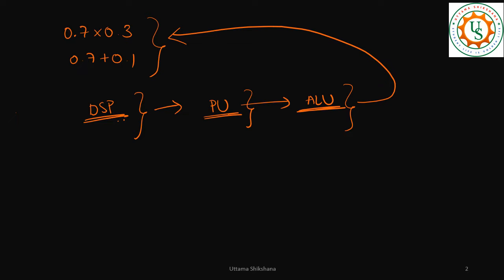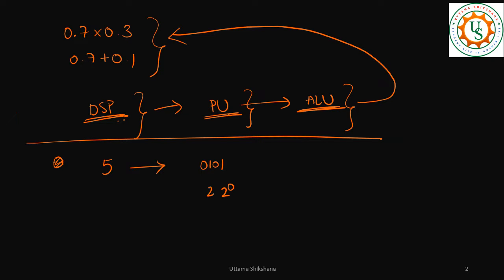According to basic mathematics, if I want to represent 5, I'll take four digits: 0101. The first bit represents 2^0, then 2^1, 2^2, and 2^3. Here we have a 1 in the 2^2 position (which is 4) and a 1 in the 2^0 position (which is 1), so 4 plus 1 equals 5. That's how integers are represented.